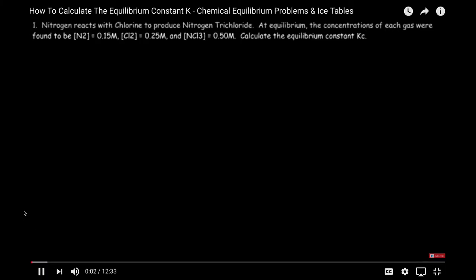In this video we're going to talk about the different ways in which we could calculate the equilibrium constant Kc. So let's start with this problem. Nitrogen reacts with chlorine to produce nitrogen trichloride. At equilibrium, the concentrations of each gas were found to be 0.15 for N2, 0.25 for Cl2, and 0.50 moles per liter for NCl3. Calculate the equilibrium constant Kc.